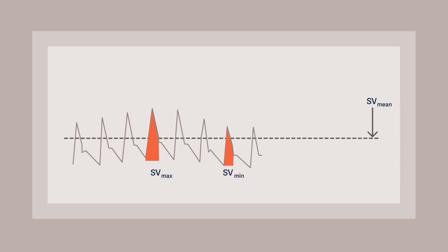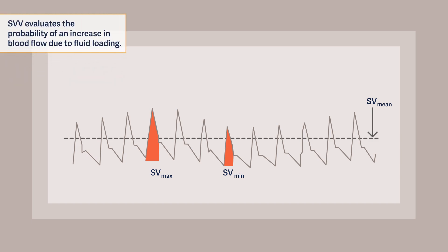Additionally, the stroke volume variation, or SVV, is also derived by the pulse contour analysis. It is a parameter on volume responsiveness that evaluates the probability of an increase in blood flow due to fluid loading.